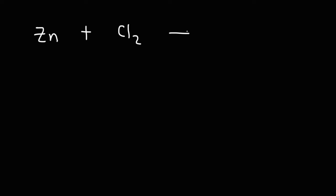Let's put this into practice. We have zinc metal reacting with chlorine gas to produce zinc chloride. Which substance is oxidized and which substance is reduced? To find this, we just need to focus on the left side — the reactant side. We need to determine the oxidation state of every element in this chemical reaction.